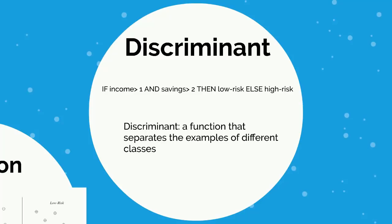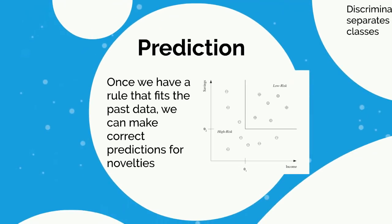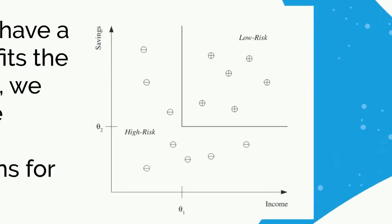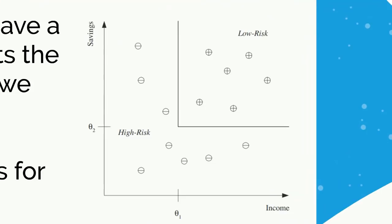Once we have that discriminant, we can move on to prediction. We have a rule that fits the past data, and now we can make correct predictions for new incoming data. This is the bread and butter of the classification algorithm — using the discriminant formed through training to predict what class new data will fall into. This example is simplified to only include income and savings, giving a simple line separating low-risk from high-risk customers. As soon as we have more inputs, this problem becomes infinitely more complex and we need a machine learning algorithm.